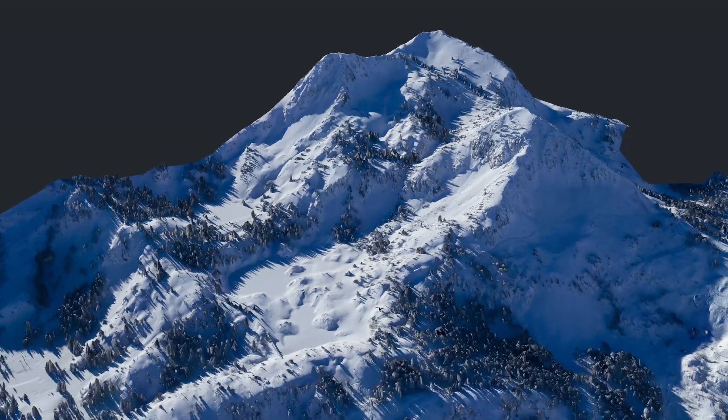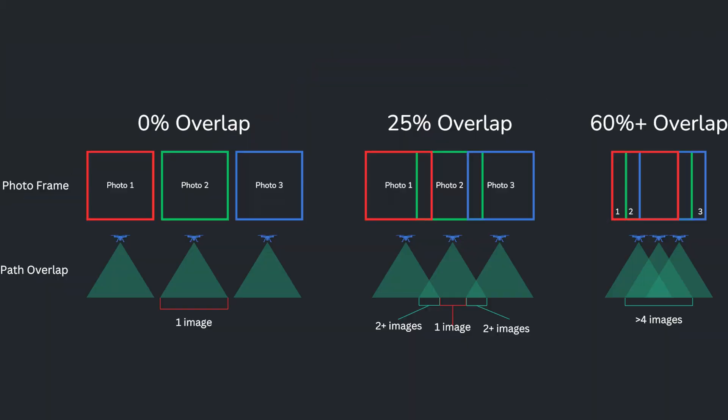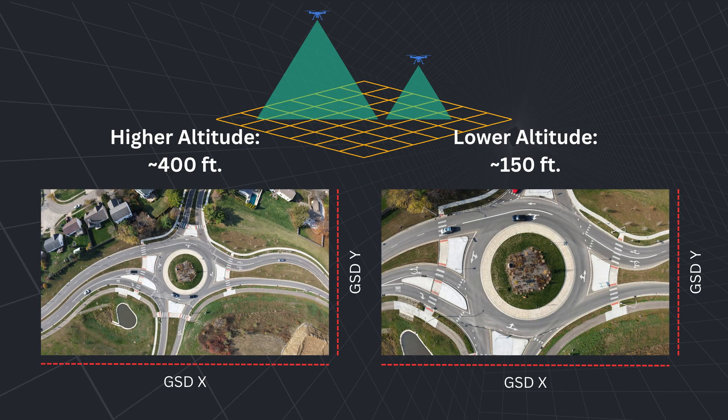The flight altitude and ground sampling distance also influence the required overlap. Lower flight altitudes and finer GSDs generally necessitate higher overlap percentages to maintain adequate image coverage and detail. The higher your altitude, the greater the sampling distance, and therefore fewer photos will need to be taken of the area.